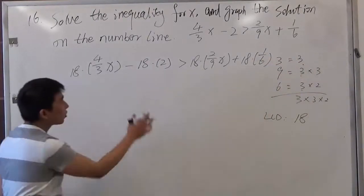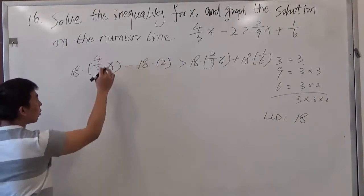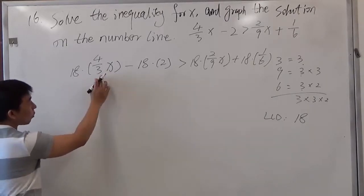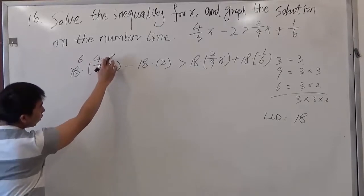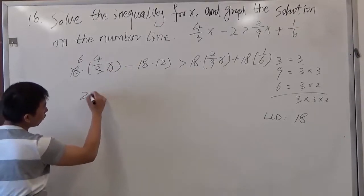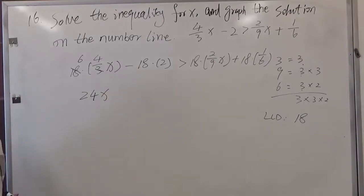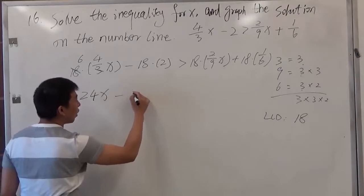Then you can simplify this inequality. We have 18 times 4 over 3 times x. That would be 18. If we divide by 3, that would be 6. And also 6 times 4x, that gives us 24x. Then, here we have negative 18 times 2, that gives us negative 36.